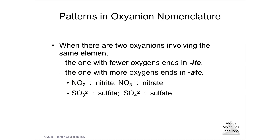Another example with sulfur: the most abundant form is sulfate, SO₄²⁻. One fewer oxygen gives sulfite, SO₃²⁻. So -ite always has one fewer oxygen than -ate.